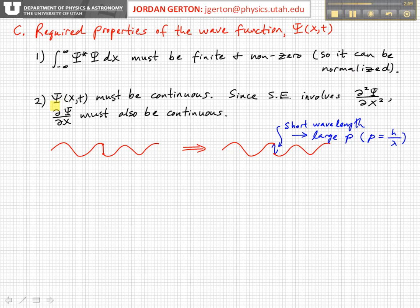Also, the wave function must be continuous. Since the Schrödinger equation involves the second derivative of the wave function, the first derivative must also be continuous - that is, the slope of the wave function must be continuous. Otherwise, the second derivative would be infinite and diverge.